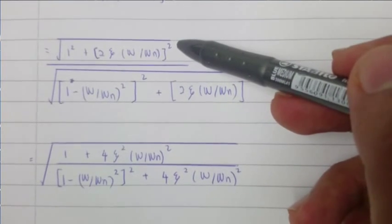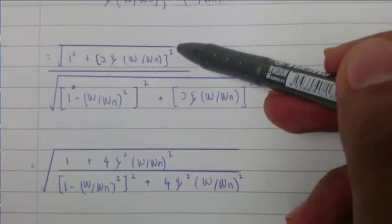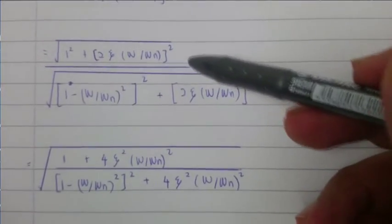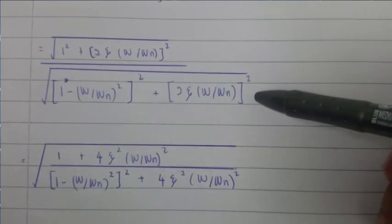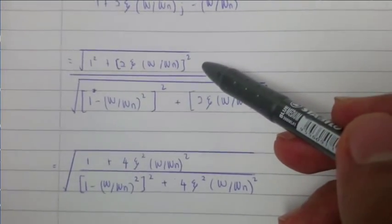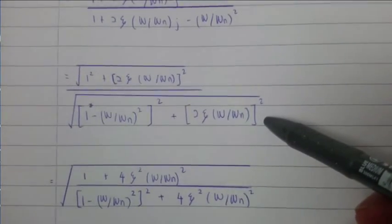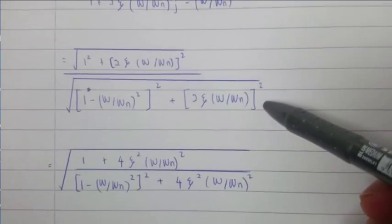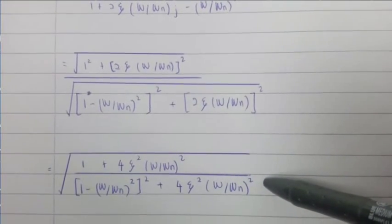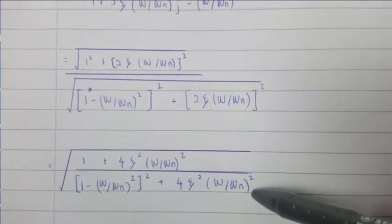We need to square root the equation because j is a complex number. So we will get square root of (1² + (2ζω/ωn)²). Same with below for the denominator, we need to square root because we need to eliminate the j which is the real number. We get this equation and the denominator we need to square root to eliminate the real number also.